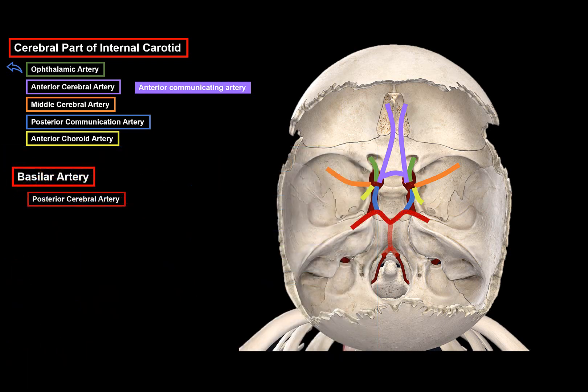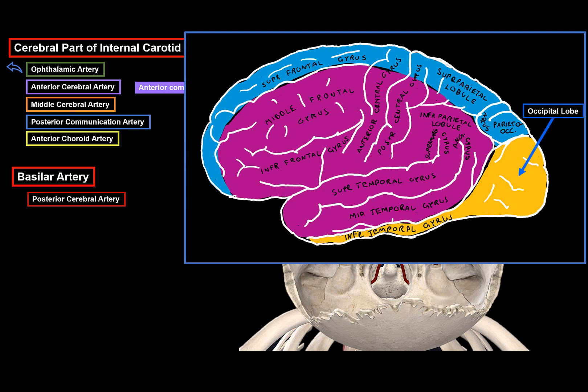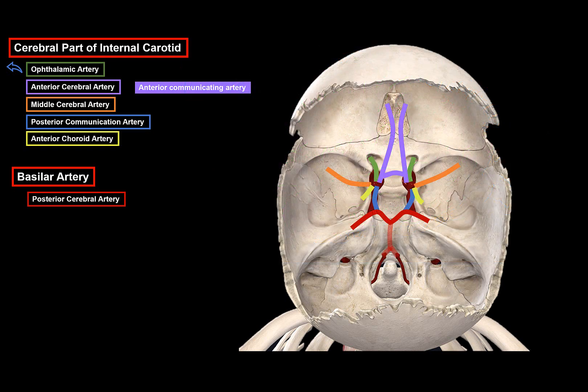The posterior cerebral artery comes from the basilar artery and supplies mostly the occipital lobe, shown in yellow, as well as the inferior temporal lobe. Both the occipital and inferior temporal regions are associated with vision, so any occlusion in the posterior cerebral artery results in visual defects along with other significant effects like pain and temperature sensation loss. That covers the internal carotid and blood supply to the brain — as long as you remember the Circle of Willis, you understand a huge majority of this topic.